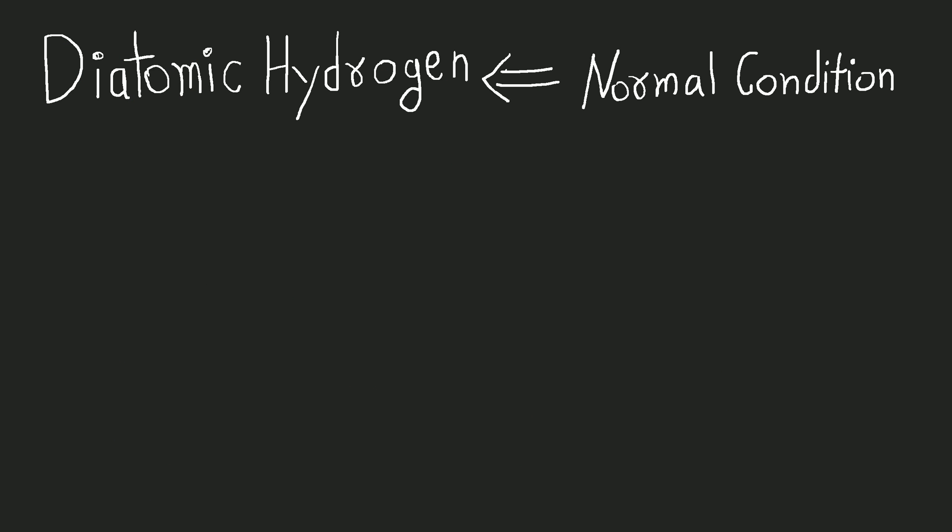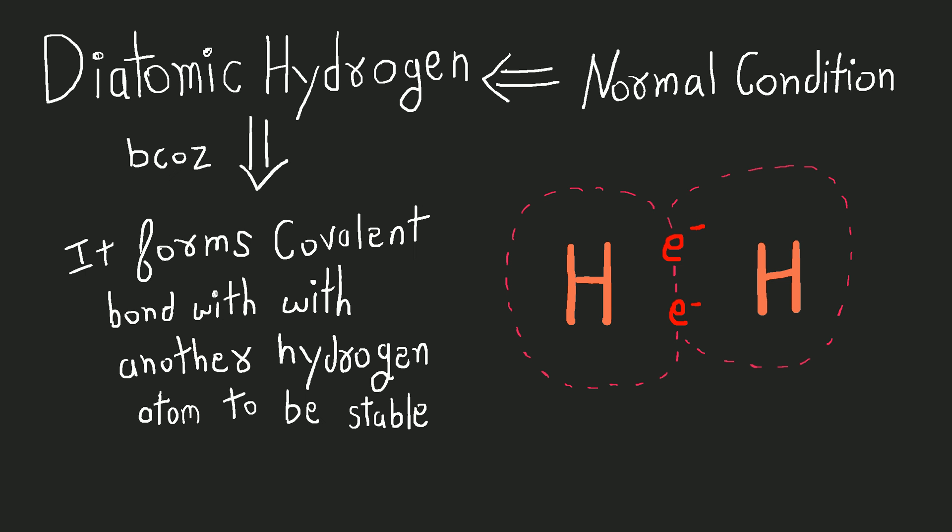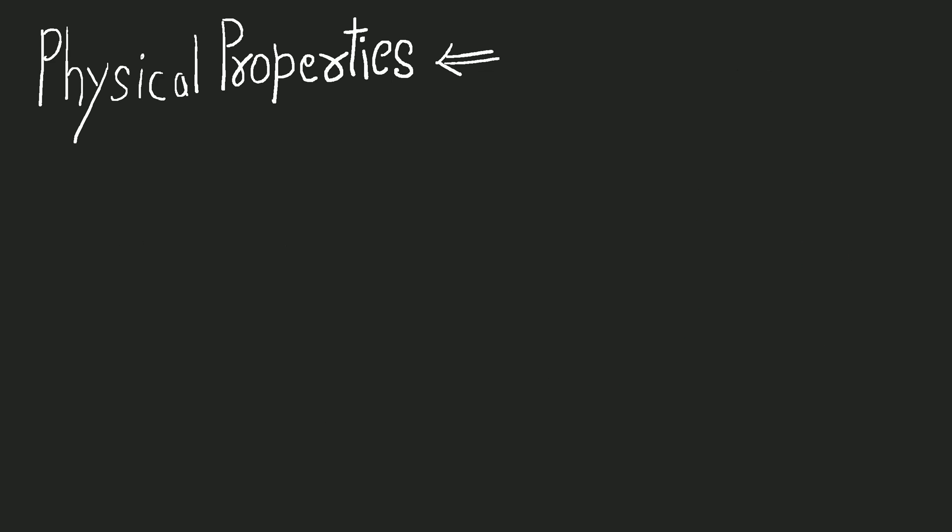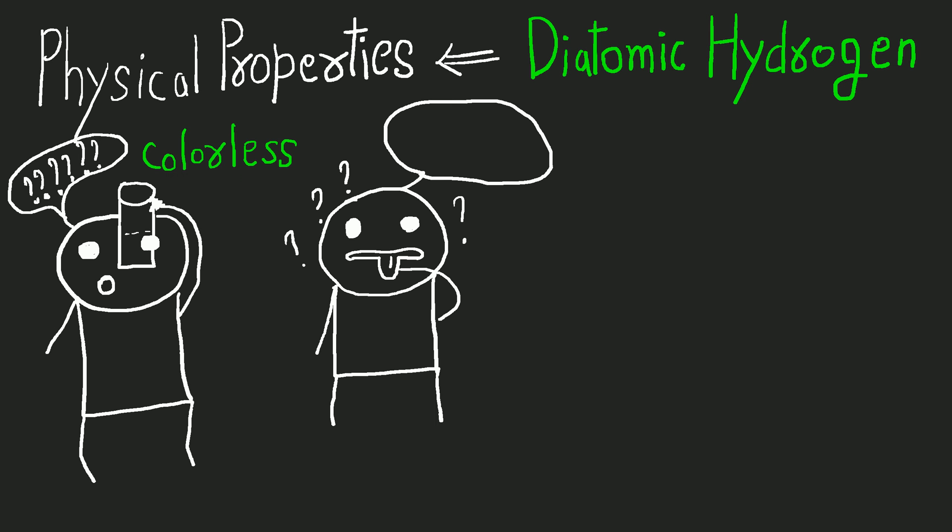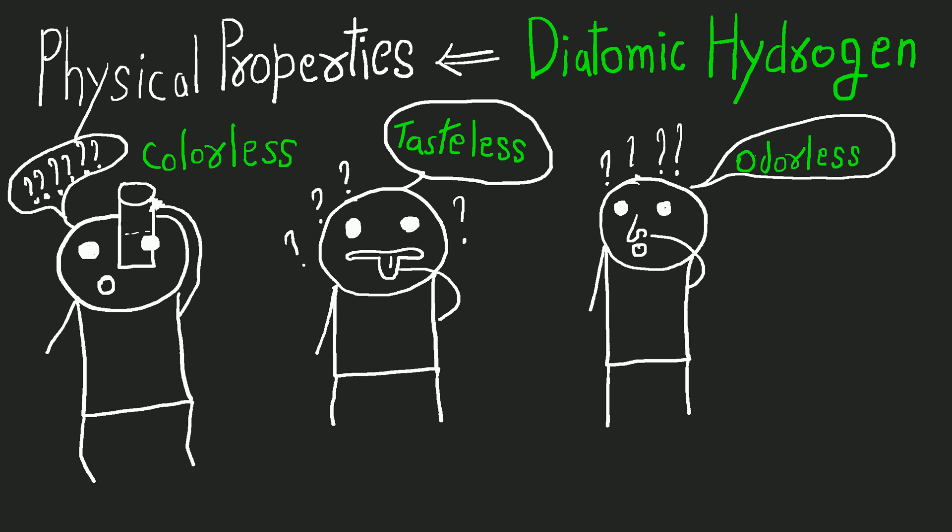Let's discuss diatomic hydrogen. Hydrogen is always found in a diatomic state, not monoatomic, because it forms a covalent bond with another hydrogen atom. Physical properties of diatomic hydrogen are: it's colorless, tasteless, and odorless.